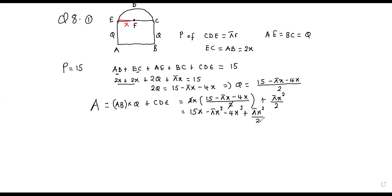So we can write this in a simplified manner: 15x, then putting the πx² terms together we have −πx²/2, and then −4x². So this is the area in terms of x for that window. That's part one.